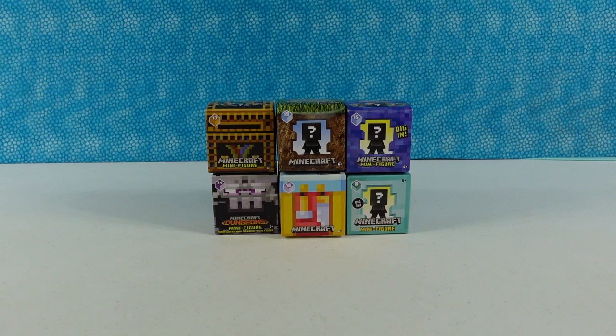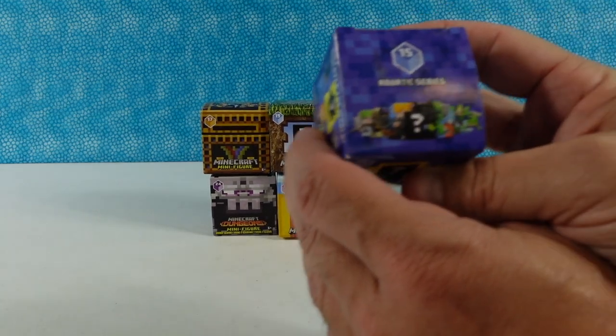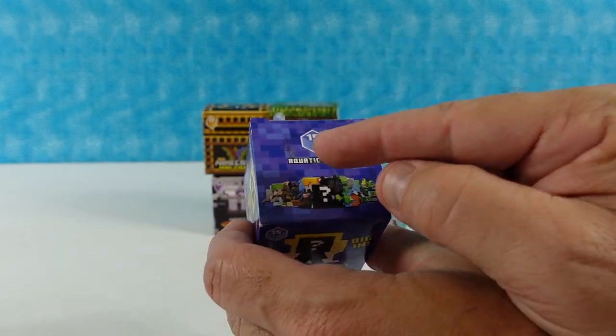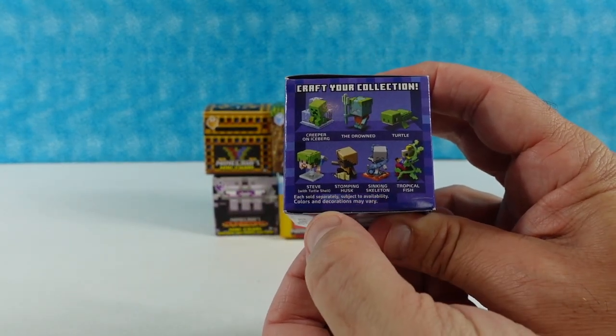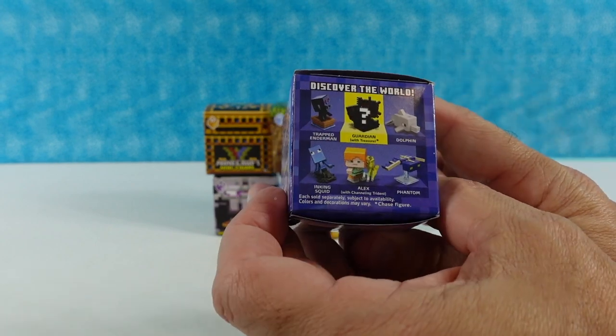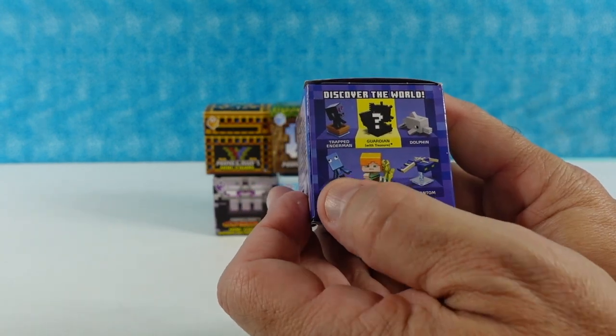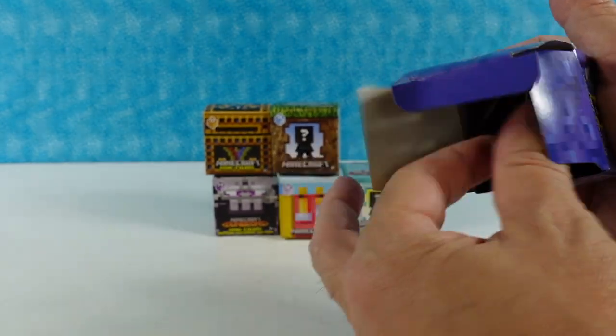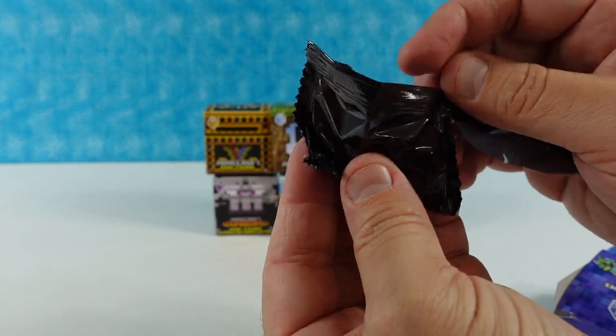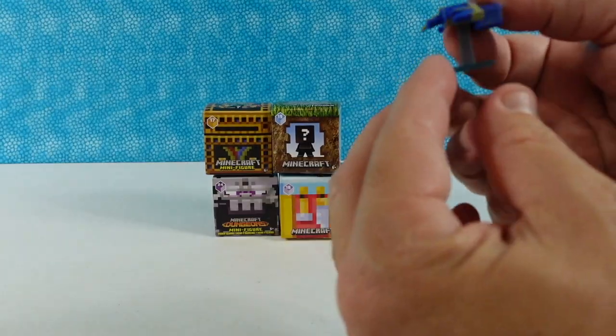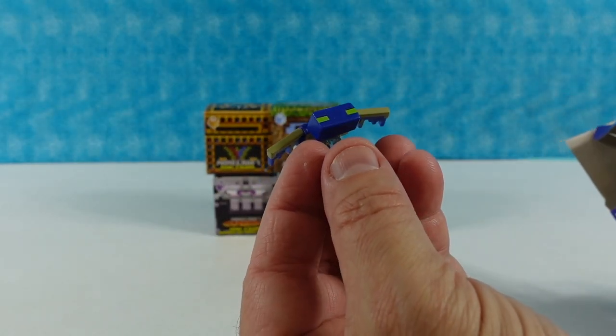I wanted to open up this blue one. So this is the aquatic series. I thought it said robotic series, I was like that's not right. So here's the people we can get. That would be cool though. I would like to get the inking squid. Okay, good luck.